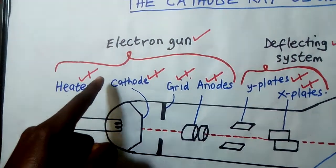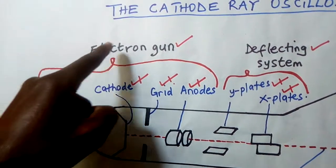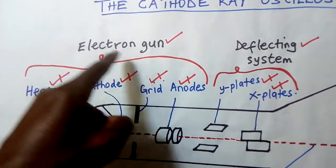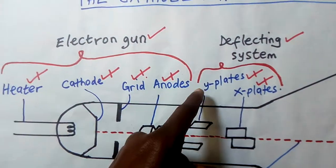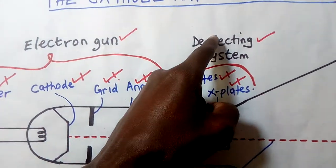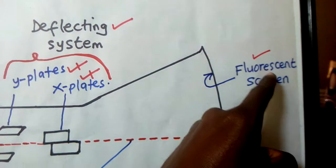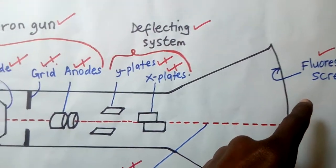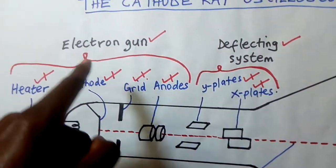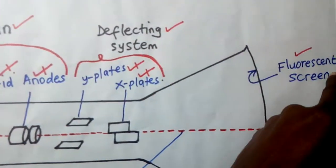The heater, the cathode, the grid, and the anode have a general name — we call it the electron gun. Then the plates — Y plates and X plates — also have a general name: deflecting system. And then the last one is the fluorescent screen. So a cathode ray oscilloscope can be divided into three main parts: the electron gun, the deflecting system, and the fluorescent screen.